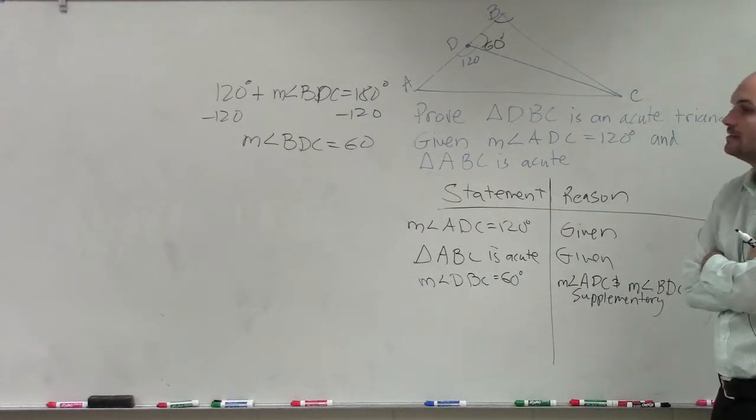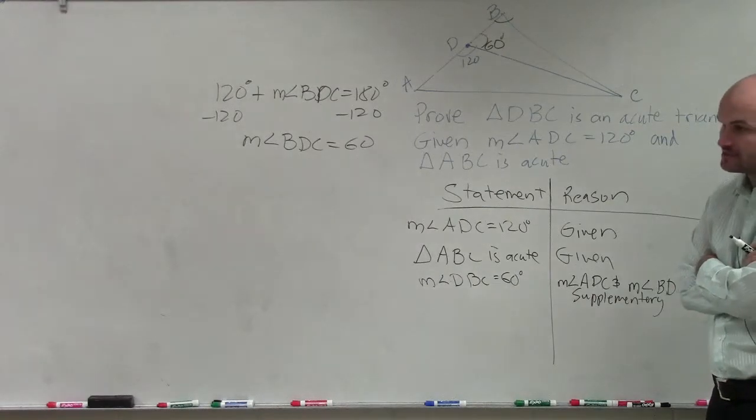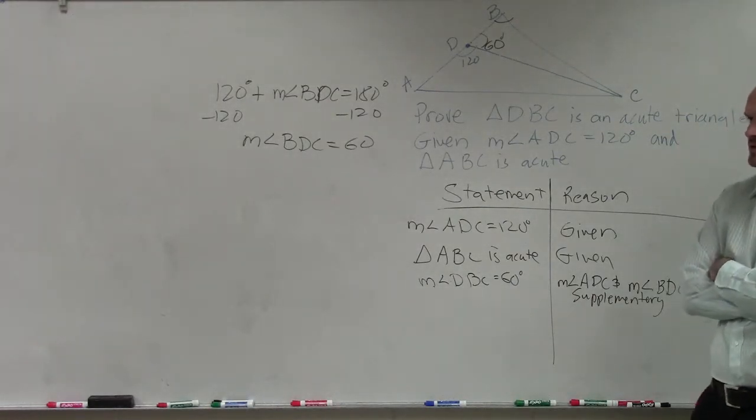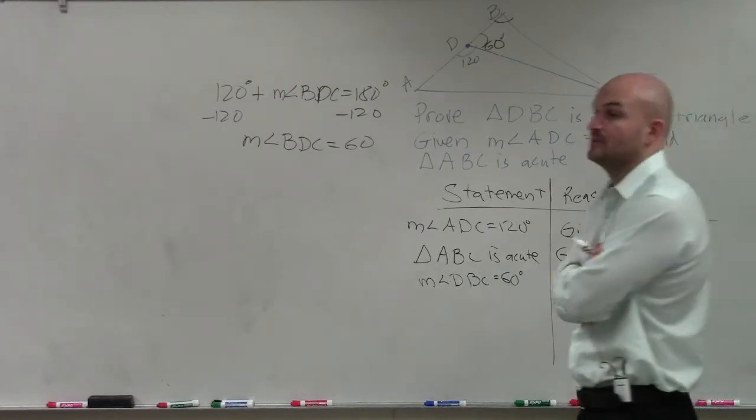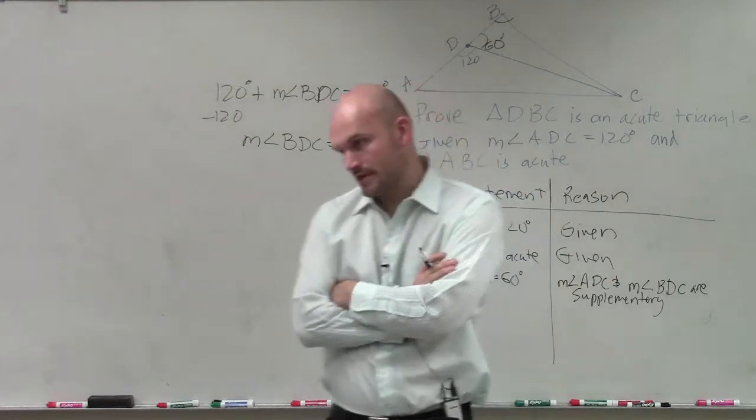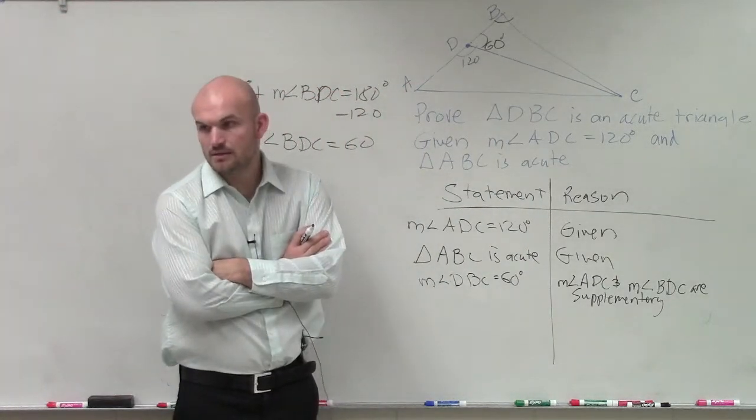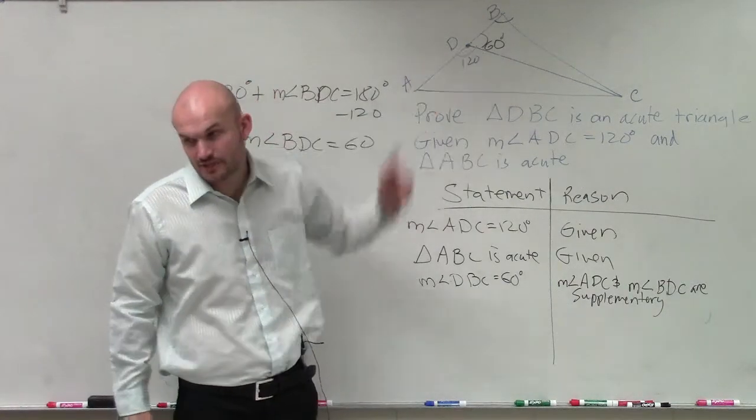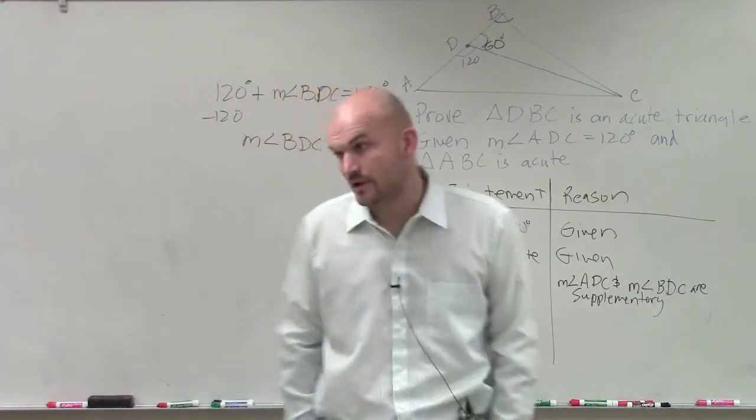That are not equal to, oh, I'm sorry. It has to have three acute angles. Well, it doesn't have to be two of the same, but they can't all be equal, right? So we don't know. All we know about B is that it has to be an acute angle, right? But we don't know the measurement of it.